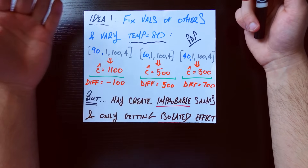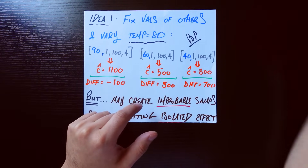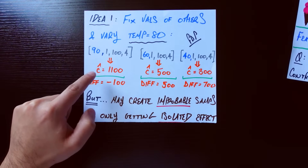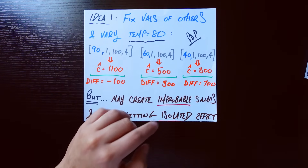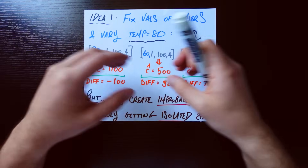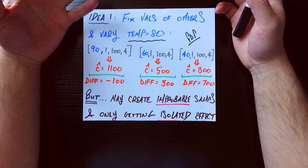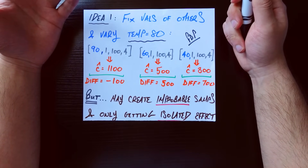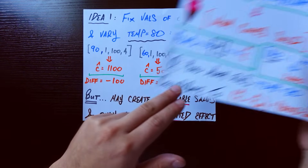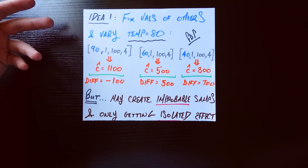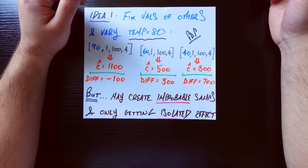We run these Frankenstein samples through our model. Let's say we get predicted cone counts of 1,100, 500, and 300. We take the difference from our actual prediction of 1,000: that gives us negative 100, 500, and 700. We wouldn't just do three of these — we'd do many, many of them, then take the average of all those differences. That average could be an answer to our question: intuitively, what's the average change in prediction if I go from my original sample to some randomly chosen temperature? This is very much in the spirit of partial dependence plots, or PDPs, which we talked about in a previous video.